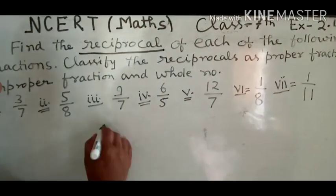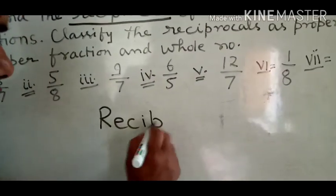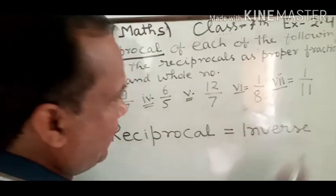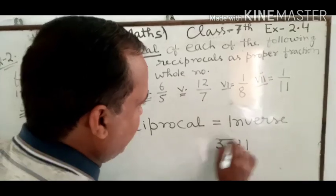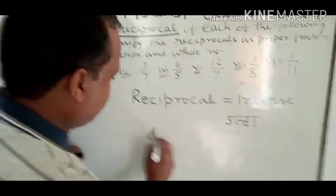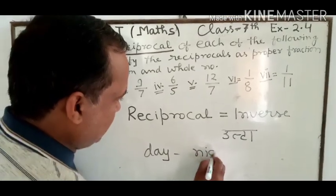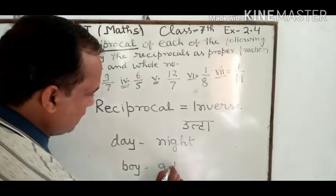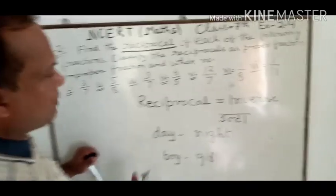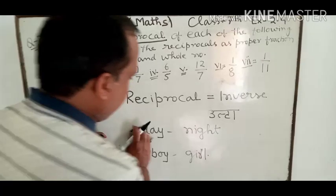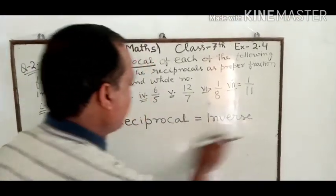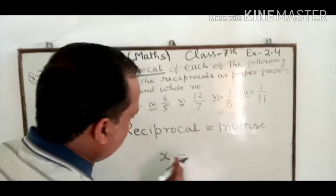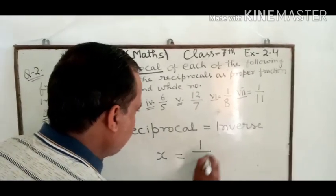Reciprocal का मतलब होता है inverse, यानी opposite — जैसे day का night होता है, boy का girl होता है, राजा का रानी होता है। तो reciprocal का मतलब है opposite। जैसे x का reciprocal निकालना है तो इस नंबर को 1 upon में डाल देंगे — 1 upon x। यह हो गया reciprocal।